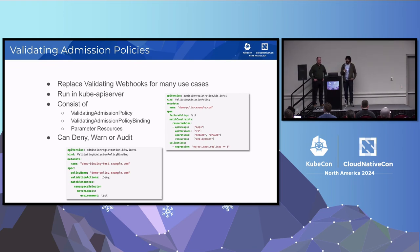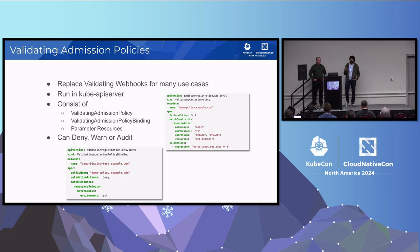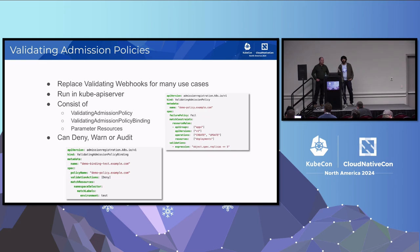At least a validating admission policy and a binding need to exist for it to have any effect. In terms of validation action, you can configure it to deny, warn, or audit. Deny means the request is rejected if validation fails. Warn means the client gets a warning. Audit records the failure in addition to the warning. Deny and warn should not be used together as this needlessly duplicates the failure in both the API response body and the HTTP warning headers.